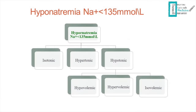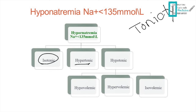For hyponatremia classification: osmolality and tonicity are basically the same value, around 285–300 mOsm/kg — that is the normal osmolality. Hyponatremia is classified according to tonicity: if tonicity is low it is hypotonic; if high, hypertonic; if neutral, isotonic. Hyponatremia is defined as a plasma sodium concentration less than 135 mmol/L.